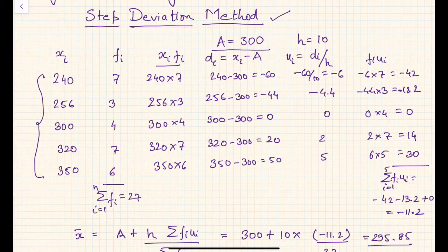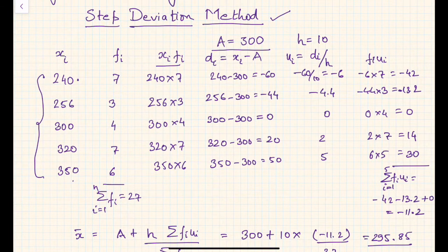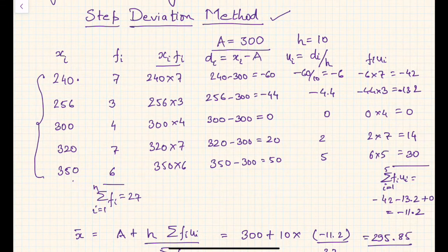The assumed mean 'a' should lie somewhere between the lowest and the maximum values of the variable. If you see, the lowest possible value is 240 and the highest is 350, so I have taken 300 as somewhere in the middle. I have taken 300 purposefully because it will be easier to subtract 300 from the various numbers. So I have subtracted 300 from 240 to get minus 60, and these are my di values.